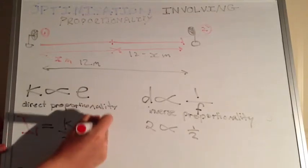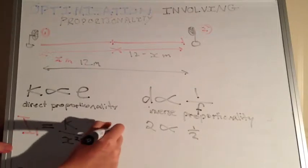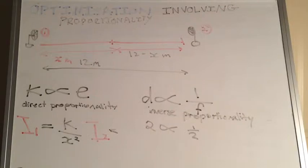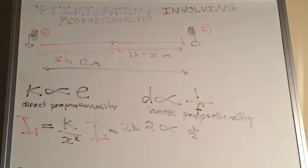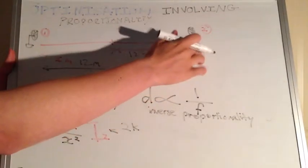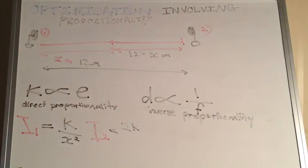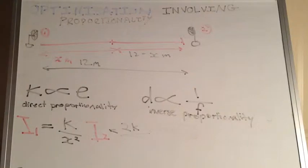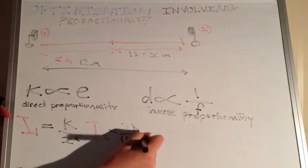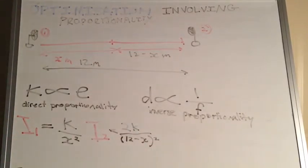Now we look at I2, the intensity of the second source. Its equation is going to be 2k over (12 minus x) squared. The 2k is because this light source is twice as powerful, so k scales by 2. The distance from the second source to the point is (12 minus x), since the total separation is 12 metres and the point is x from the first source. We square that distance because intensity is proportional to the square of the distance.